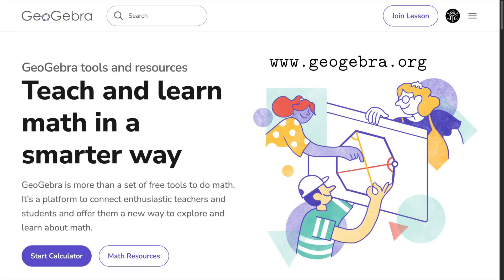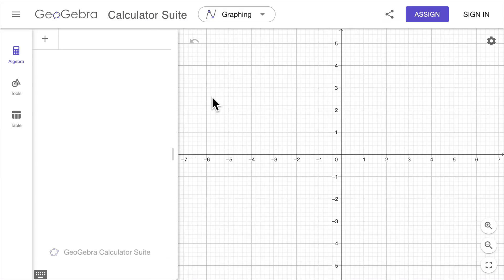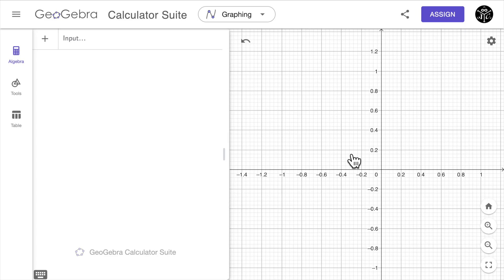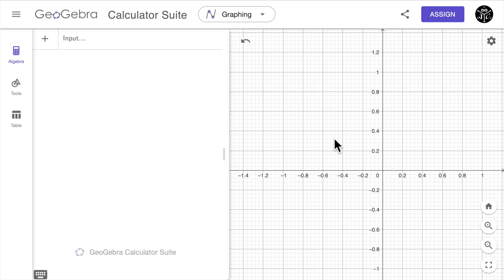All right now that we know all this information we can build this animation using GeoGebra. So let's go to geogebra.org and we're going to open the main calculator. Here I'm going to adjust a little bit the input and also the axis just to have a better view.